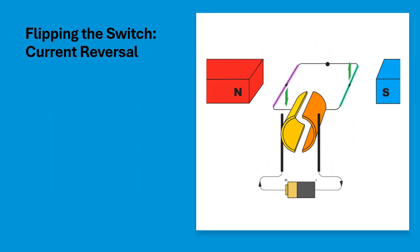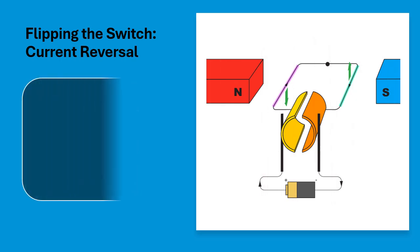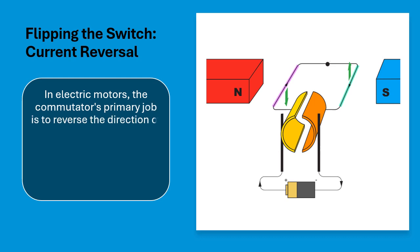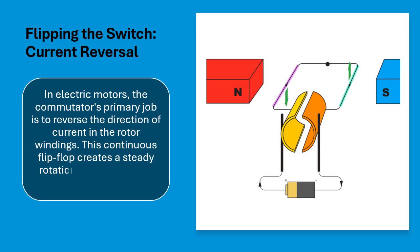Flipping the switch — current reversal. In electric motors, the commutator's primary job is to reverse the direction of current in the rotor windings. This continuous flip-flop creates a steady rotational force, keeping the motor humming along.